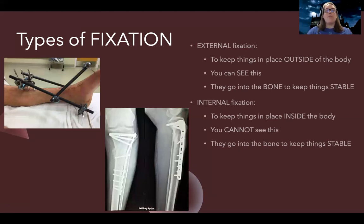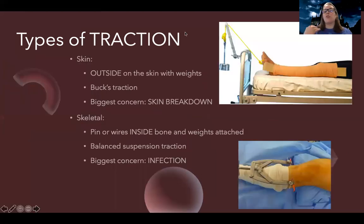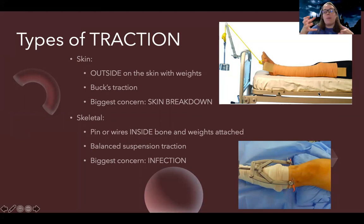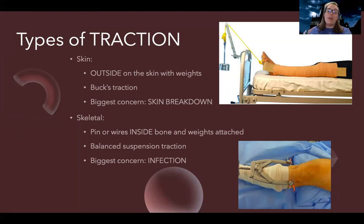They pretty much keep the bone stable. Whether a patient needs one versus the other is up to the doctor — it depends on the type of fracture. Last but not least, there are also types of traction. There's skin traction and skeletal traction. Skin traction is outside the body, on the skin — literally something attached to the skin, usually like a boot or a wrap, and then there's weights attached to it, like this top picture. This is what we call Buck's traction, but of course there's something rubbing on the skin, so my biggest concern is going to be skin breakdown.